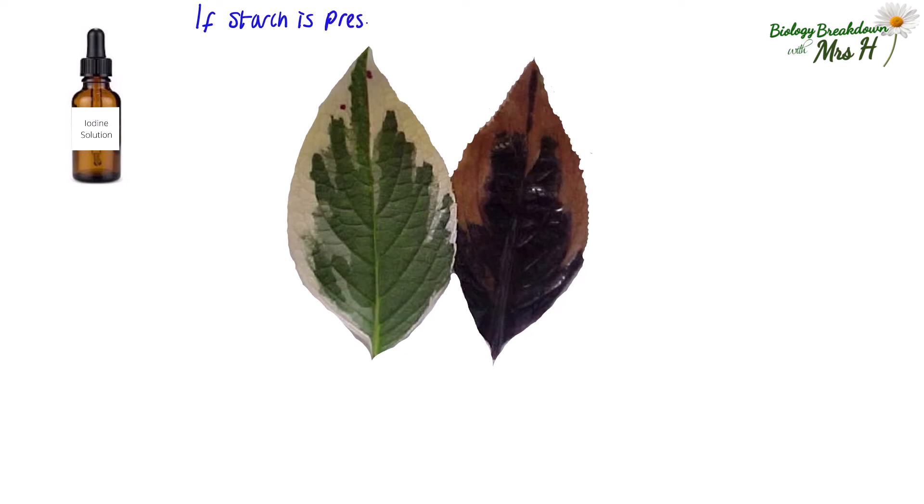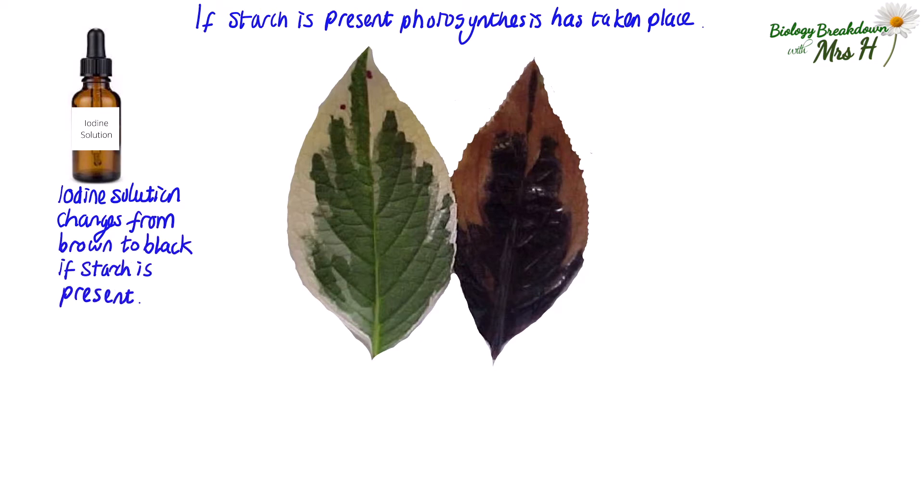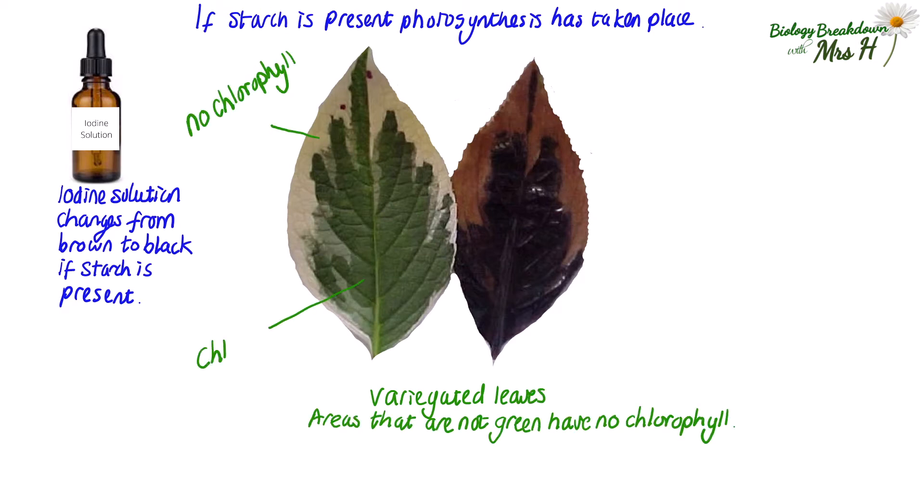So if starch is present, photosynthesis has taken place. Iodine solution is used to test for starch and changes from brown to black if starch is present, and stays brown if starch is not present. These are variegated leaves. The areas that are not green have no chlorophyll, and if there's no chlorophyll, there'll be no photosynthesis and therefore no starch present.